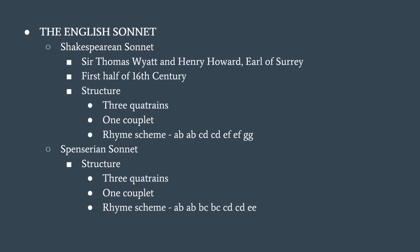The sonnet was introduced into England in the first half of the 16th century by Sir Thomas Wyatt and Henry Howard, Earl of Surrey, who were two English politicians. They adopted a rhyme scheme different from the Italian sonnet, composing their sonnets in three quatrains in alternate rhyme followed by a concluding couplet: ABAB CDCD EFEF GG.